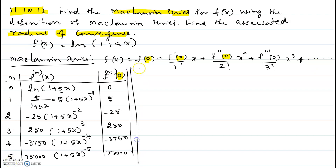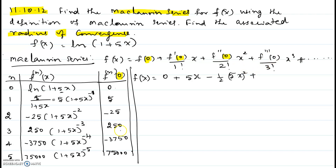If you plug in those values into the expression for f of x, you get: f of 0 equals 0, then f prime of 0 over 1 factorial — f prime of 0 equals 5 — so it is just 5x. The second term has 2 factorial, which is 2, so one half, and f double prime of 0 is negative 25. The third derivative at 0 is 250, so we get 250 over 3 factorial, which is 6, times x cubed.